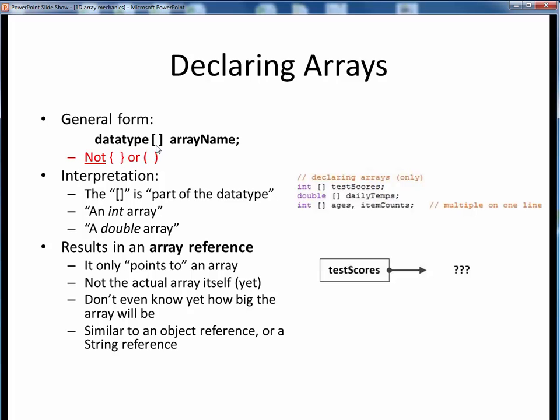Also, those brackets are effectively an extension of the data type, and indicate that it's an array of that data type. For example, an int array, or a double array. Here on the right are some examples of array declarations. This first one is an int array called test scores. The second one is a double array called daily temps.